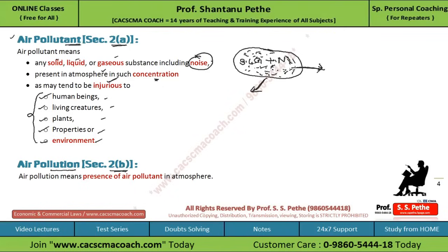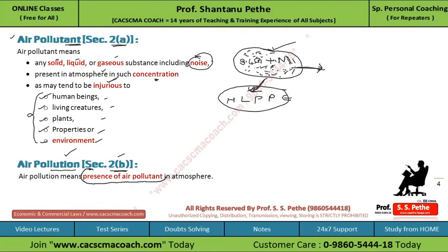It is the concentration which decides whether it is an air pollutant or not. If it is present in such a concentration which will be injurious to humans, living creatures, plants, property, and environment, then only it will be treated as an air pollutant. Now the connected definition — air pollution — is defined under section 2B. Air pollution simply means the presence of air pollutant in the atmosphere. So if an air pollutant is present in the atmosphere, it will be treated as air pollution.